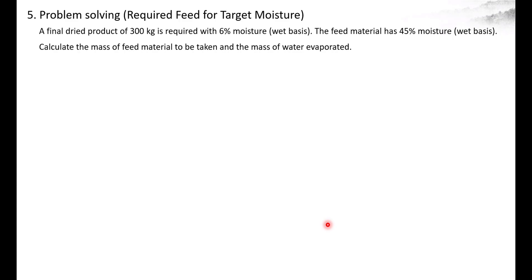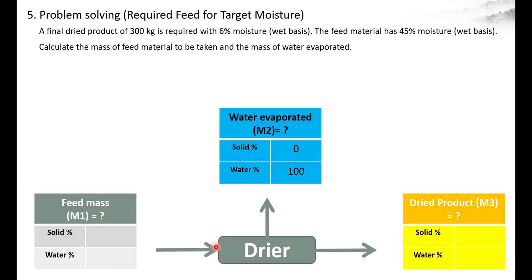The given value is not the feed — the given value is the final dried product of 300 kg. Let's start drawing the schematic. The feed is entering the dryer. The water evaporated is coming out as M2, and the final product is termed as M3. The dried product is 300 kg as per the question, so M3 is 300 kg.